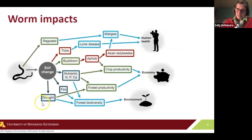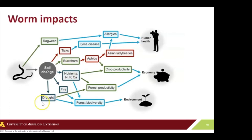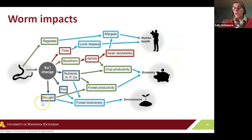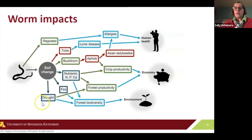One of the things that's so difficult about jumping worms in general is that they change the soil. And when you change the soil, different species can live or thrive in that soil, and the native species are pushed aside. They're overrun by plants that take advantage of the soil change, which is not the native situation — buckthorn being an example. Ticks are more prevalent because of soil change and the change in vegetation. Fire, drought, nutrients, and all these things affect the economy and the environment, so invasive species can have a very wide range of impact.